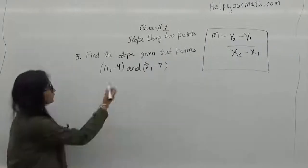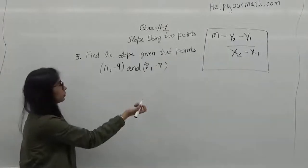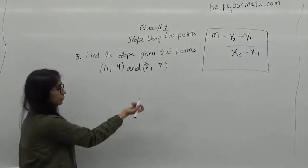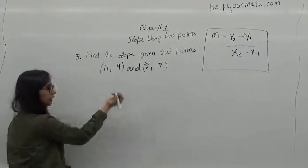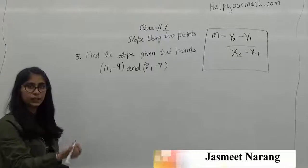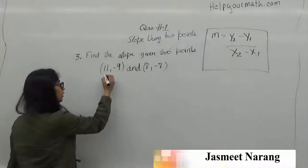Question 3: Find the slope given two points. These are the points. So I will just find x1, y1 and x2, y2.